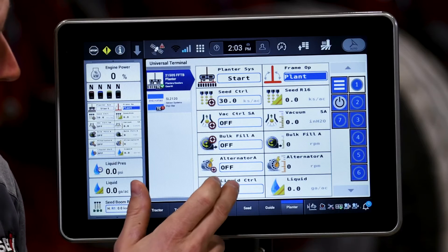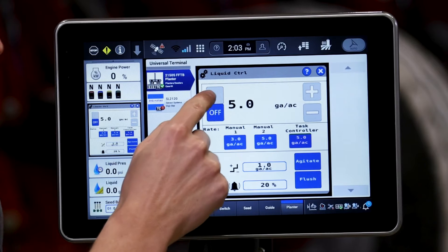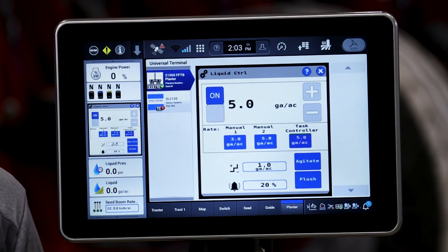The liquid control window that you see in the planter UT is going to need to be turned on. We are going to look for operator input at any point in time.